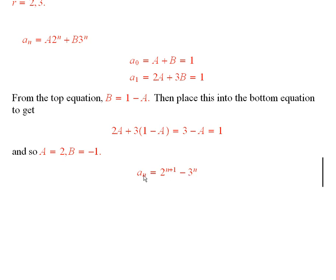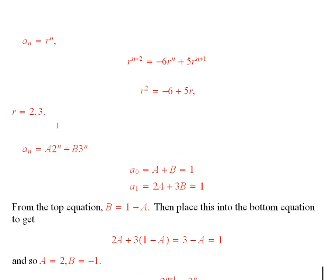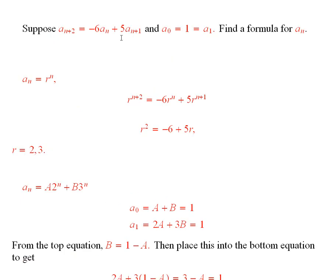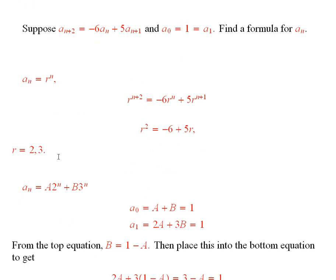Then you can also verify that if n is equal to 1, you get 4 minus 3, and that is also 1. So you see it satisfies the initial condition. And then it is really a good idea to just go ahead and plug in and see that it satisfies the recurrence relation. But it will because that is the way we chose r.